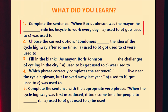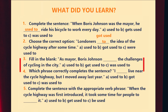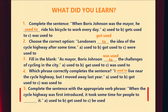Question one: when Boris Johnson was the mayor, he used to ride his bicycle to work every day. Answer: used to (A). Number two: Londoners got used to the idea of the cycle highway after some time. Answer: got used to (B). Number three: as Mayor, Boris Johnson was used to the challenges of cycling in the city. Answer: be used to (C). Number four: I used to live near the cycle highway, but I moved away last year. Answer: used to (A). Number five: when the cycle highway was first introduced, it took some time for people to get used to it. Answer: get used to (B).